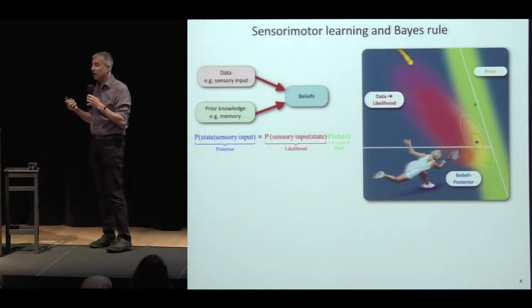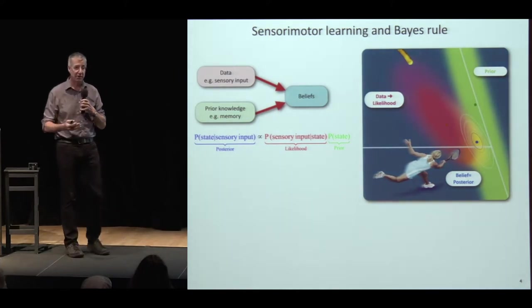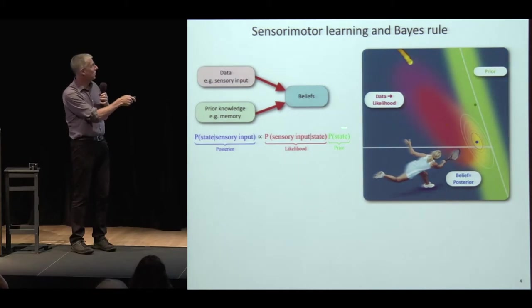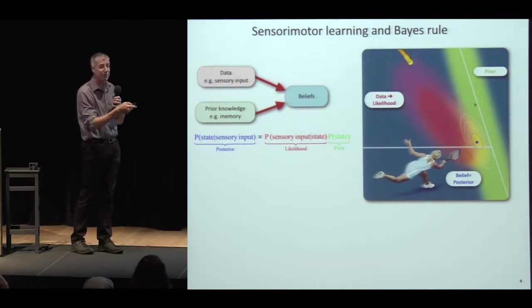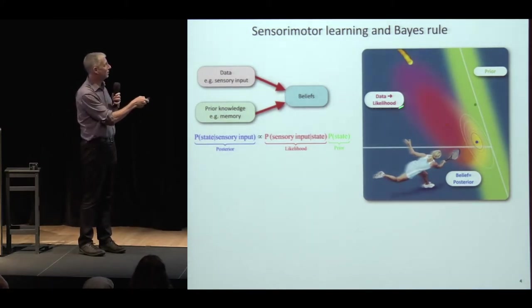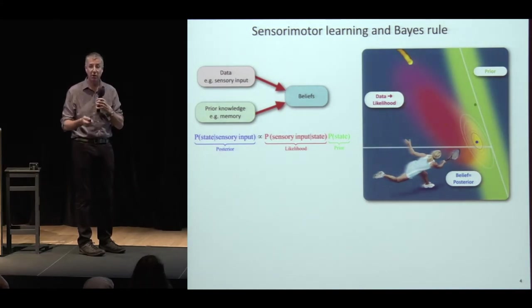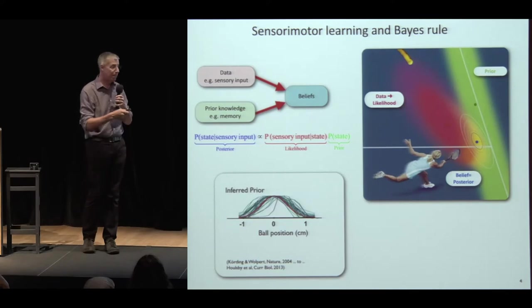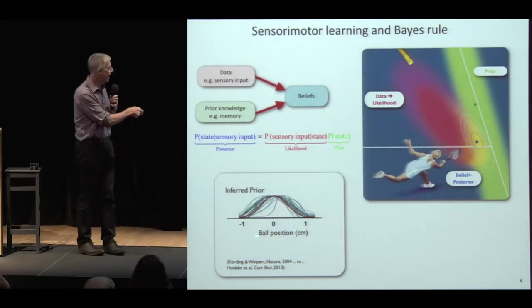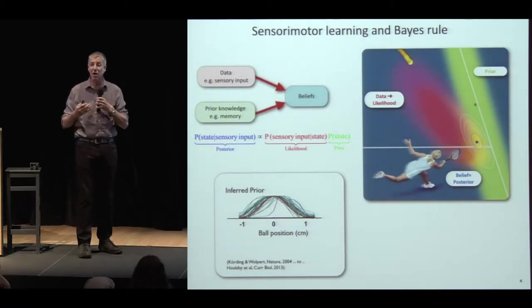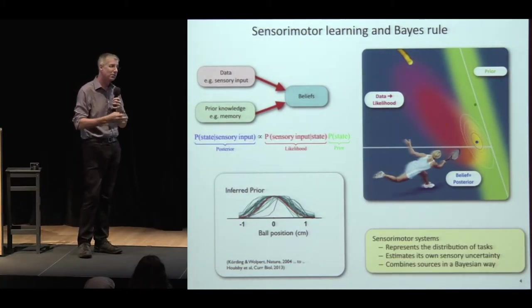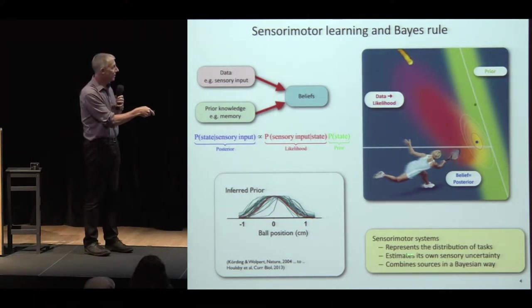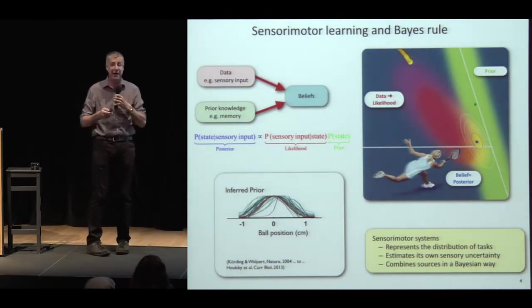About ten years ago, we started thinking: does the brain use Bayesian processing to help? The idea is you generate beliefs based on sensory data and prior knowledge. In a motor task like tennis, to estimate where the ball will bounce, you use sensory evidence — the likelihood shown in red — and prior knowledge about where the ball tends to bounce, shown in green, and combine those to generate a posterior. We showed that if you apply a prior to a motor task and look at what best explains subjects' data, they internalize that prior. Studies show that to a large degree — not always perfectly — the sensory motor system represents distributions of tasks, learns statistics, estimates its own sensory uncertainty to get the likelihood, and can combine those in a Bayesian way.